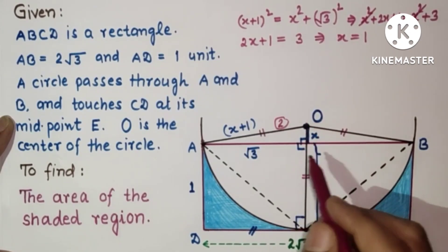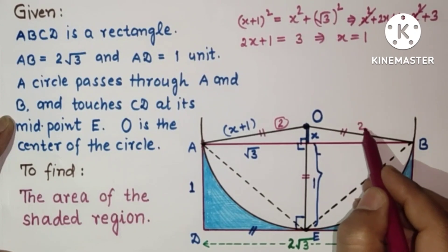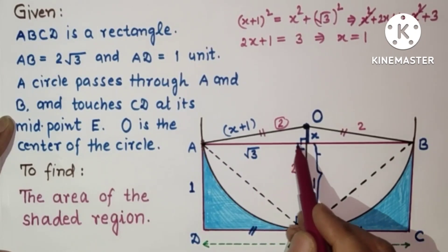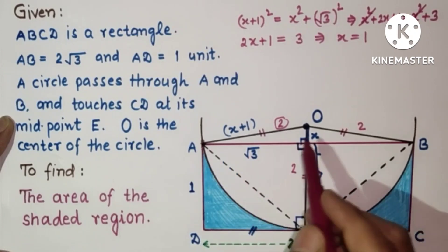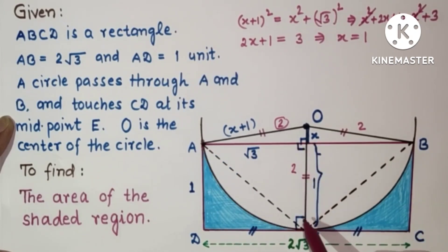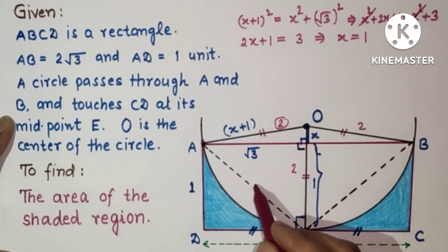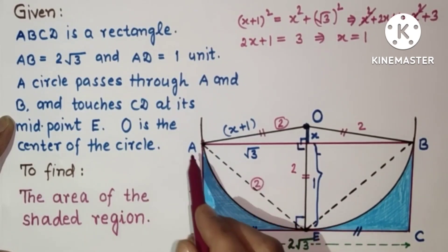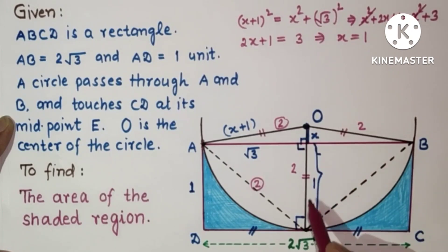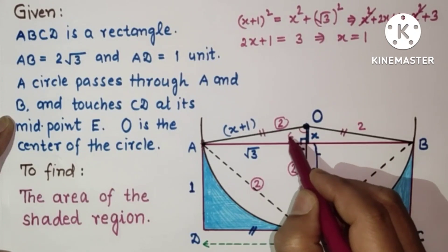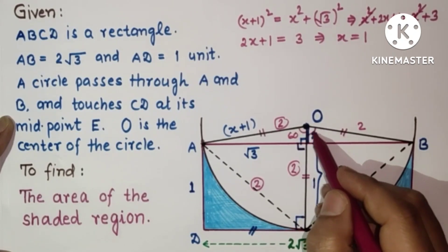Since x = 1, the radius is x + 1 = 2. So OA = OB = OE = 2. If we join AE and use the right-angle triangle, AE = √(√3² + 1²) = √(3+1) = √4 = 2. So OA = OB = AB = 2, meaning triangle OAB is equilateral, giving angles of 60° each at A and B. Similarly, angle AOB is also 60°.